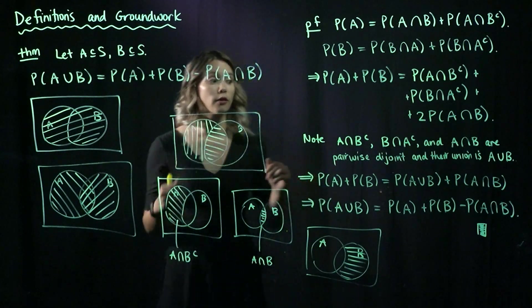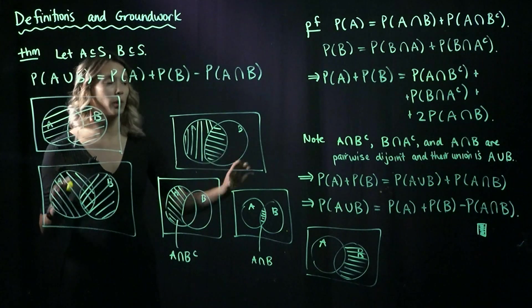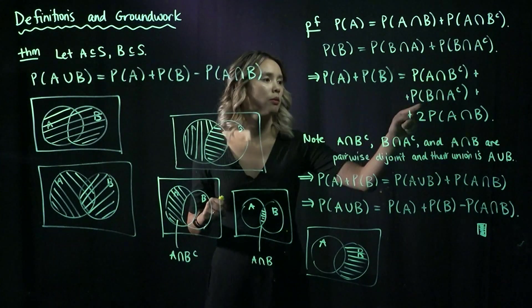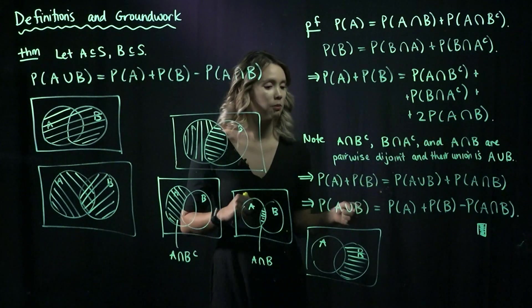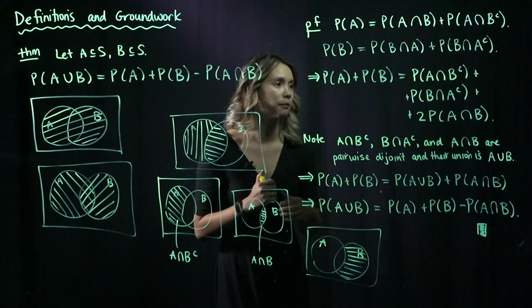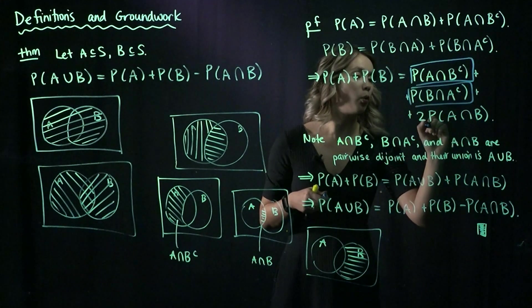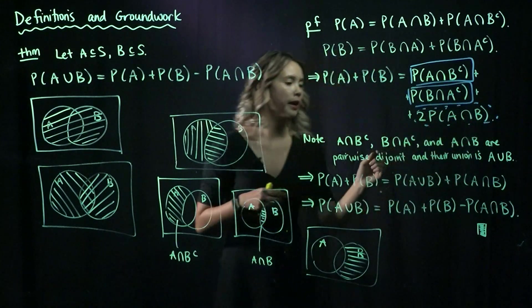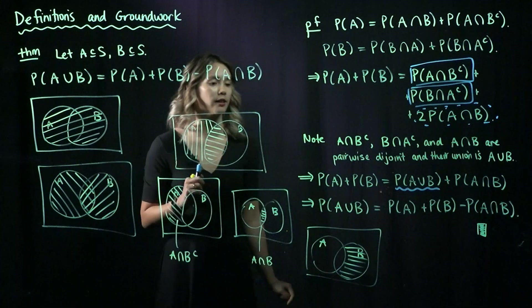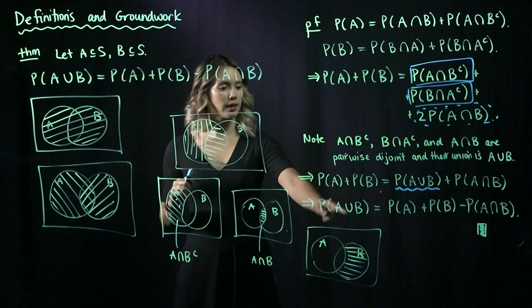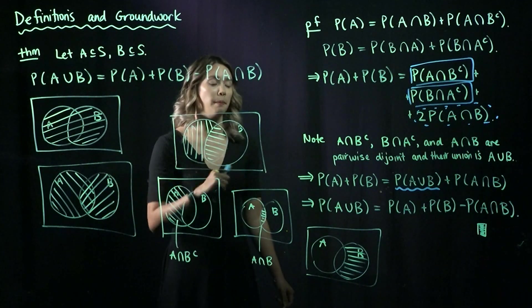If we chose any two combinations of these three sets, they would all be disjoint — so they're pairwise disjoint. Furthermore, the union of these three shaded areas is A union B. That means we can rewrite: probability of A intersect B complement, plus probability of B intersect A complement, plus one of the probability of A intersect B terms, as probability of A union B. Then we still have one probability of A intersect B left over. So P(A) plus P(B) equals P(A union B) plus P(A intersect B), which rearranges to P(A union B) equals P(A) plus P(B) minus P(A intersect B).